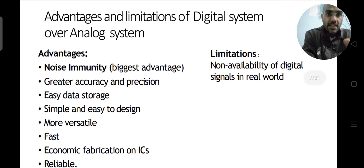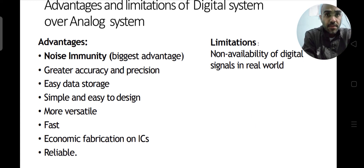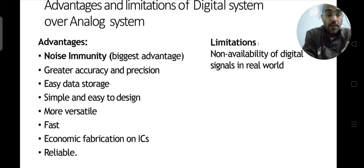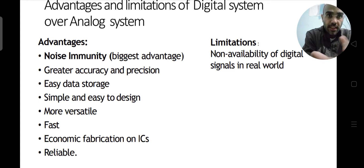Now we will discuss the reasons because of which digital systems were able to replace almost all of the analog systems. Analog systems are also still in use in the current era, but mostly we use digital systems — analog systems are useful only for some applications. The most important reason because of which digital systems were able to replace analog systems is the noise immunity provided by digital systems.